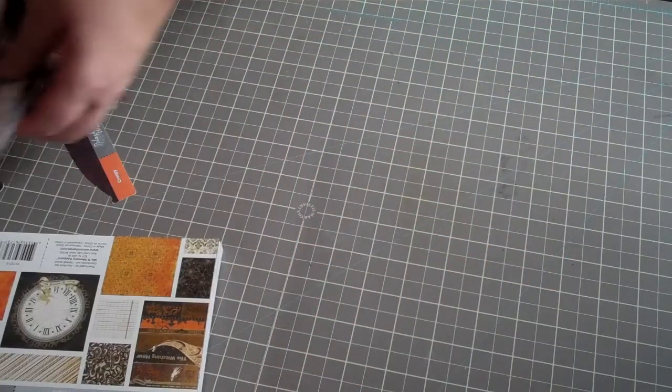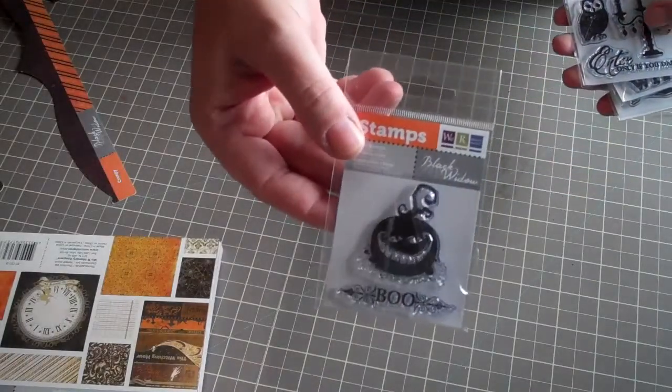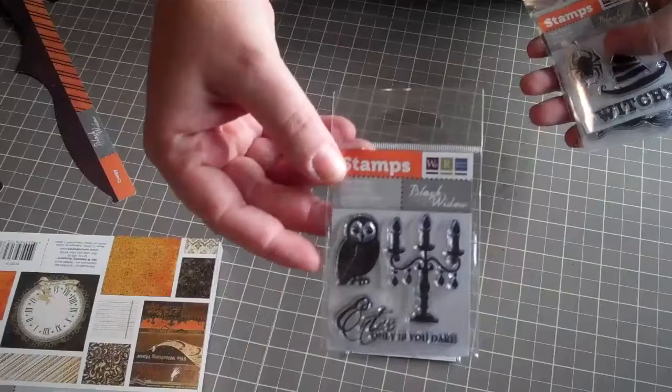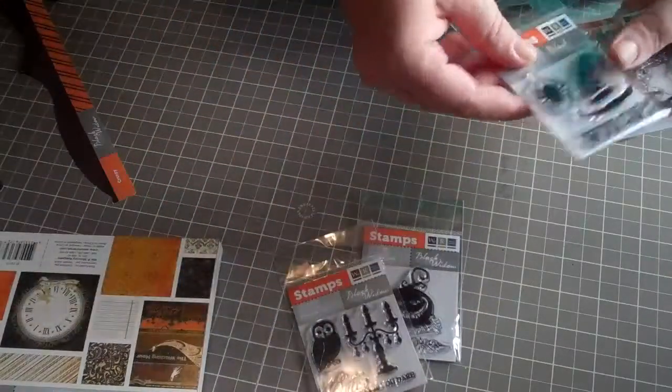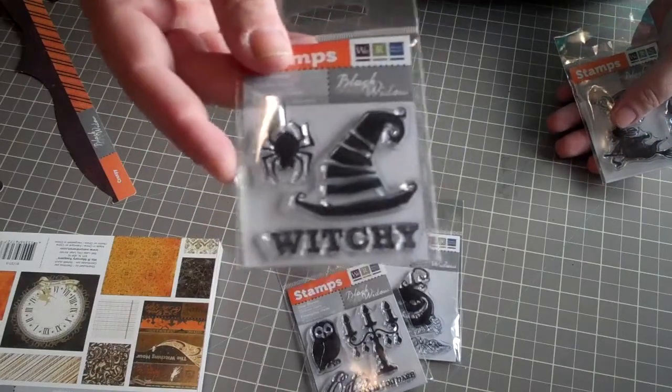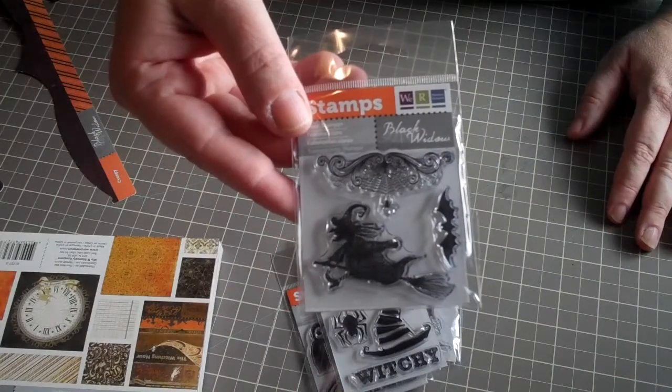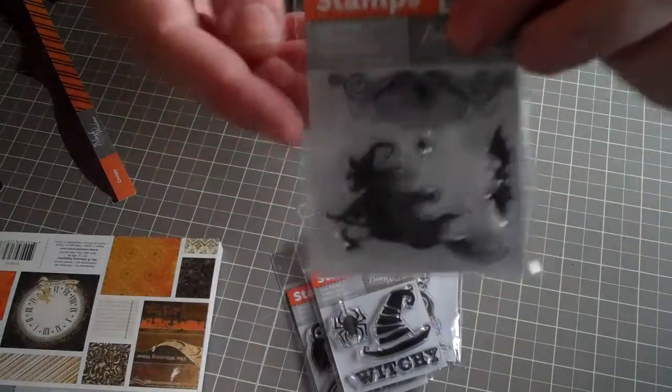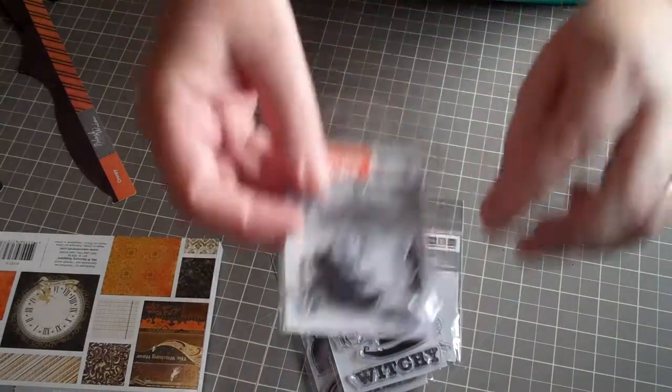And of course the coordinating stamps, this cool boo pumpkin, owl, and a really nice candlestick. I love this one, the witch's hat with the witchy and the spider. Fun, fun, fun, good for treat bags. And finally another witch flying on a broom and a really nice scroll with another spider, or I'm sorry, a bat with a bat. So that looks really cool too.